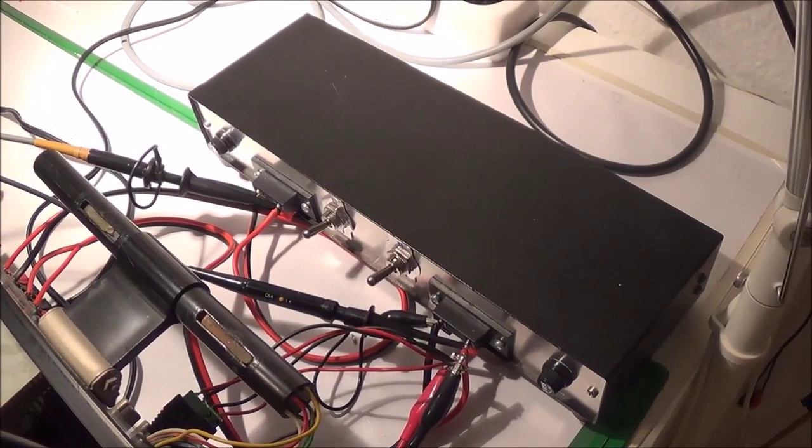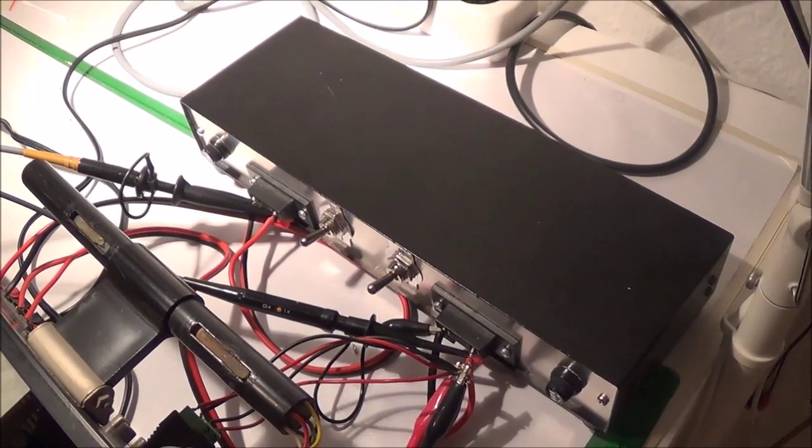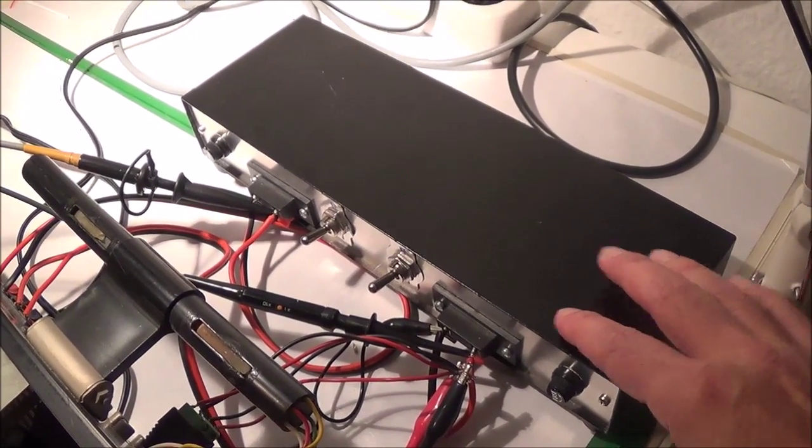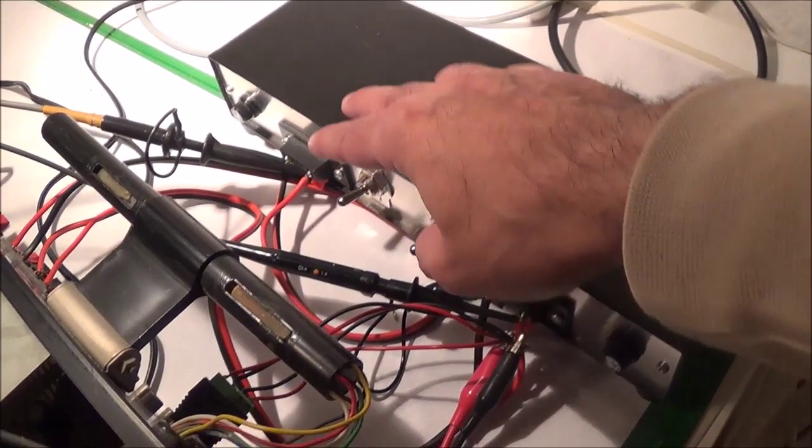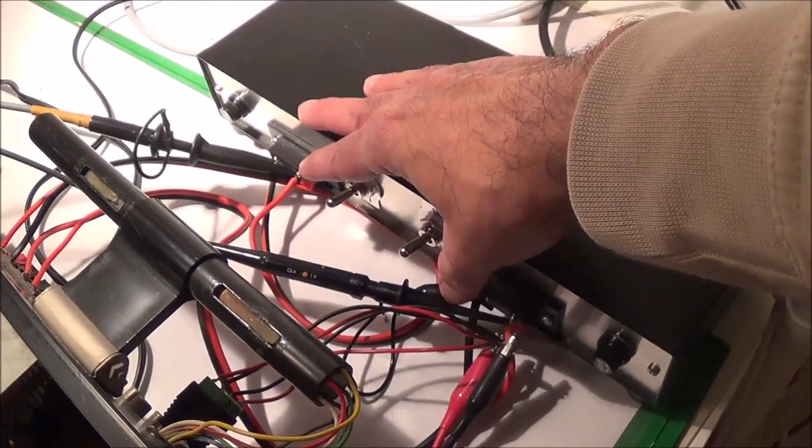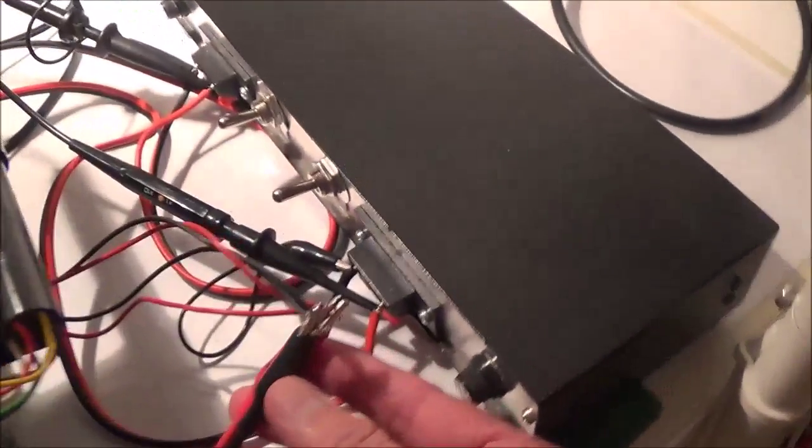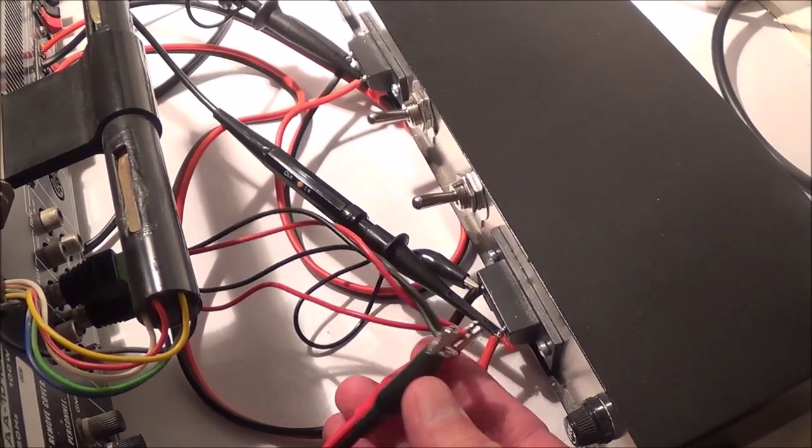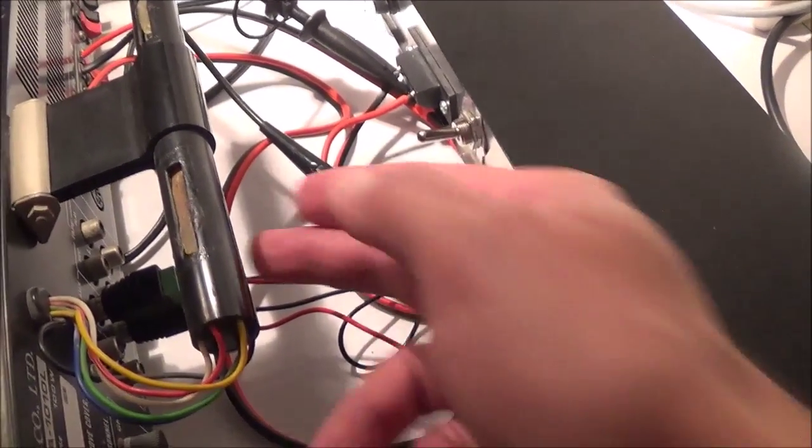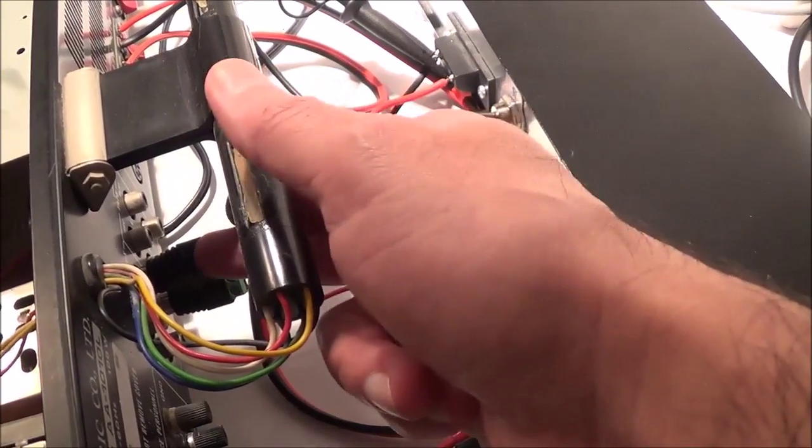Today I'm going to do a power output test of my Akai AA-1010 stereo receiver. I've got the probes of the oscilloscope hooked up across the 8 ohm dummy load, and for my signal generator I'm going to be feeding a 1000 Hz sine wave into the aux jack.